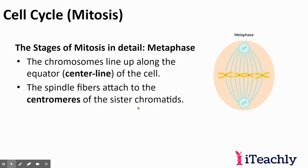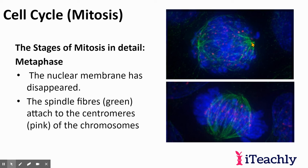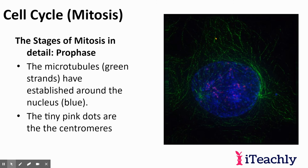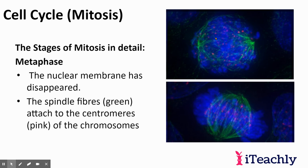Metaphase is when the chromosomes — or sister chromatids — line up in the middle. The spindle fibers are now attached to the sister chromatids. You can see the centrioles at either side, and these are the spindle fibers that are getting formed. The centromeres — those pink dots — hold the sister chromatids together as they align in the middle. This is an example of metaphase.